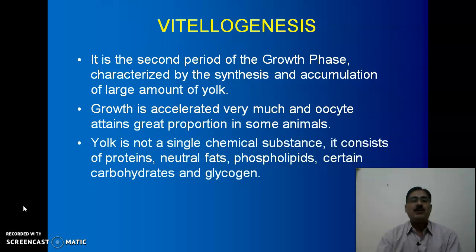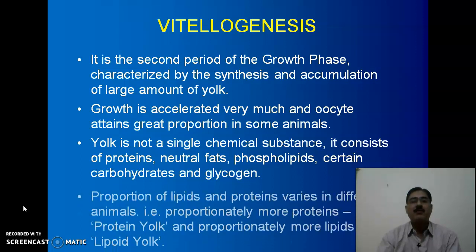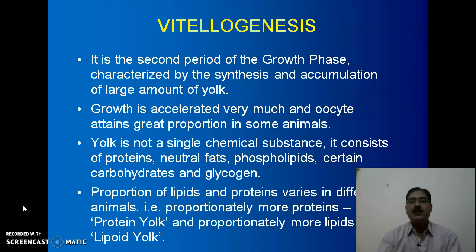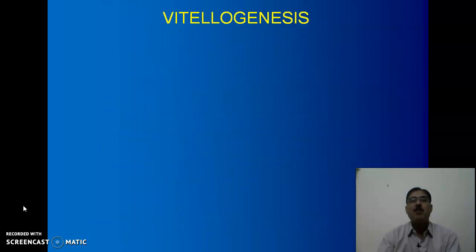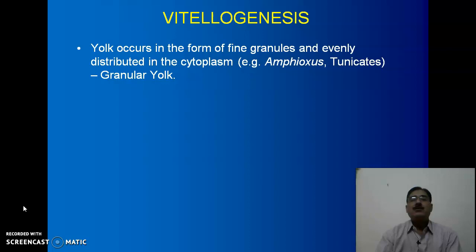Yolk is not a single chemical substance. It consists of proteins, neutral fats, phospholipids, certain carbohydrates, and glycogen. The proportion of lipids and proteins varies in different animals. Proportionately more proteins means it is protein yolk, and if more lipids are present it is lipoid yolk. Yolk occurs in the form of fine granules and is evenly distributed in the cytoplasm of animals which have isolecithal eggs, as in the case of amphioxus and some tunicates.